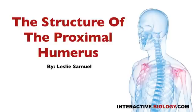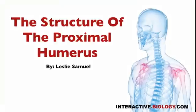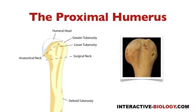Hello, and welcome to another episode of Interactive Biology TV, where we're making biology fun. My name is Leslie Samuel, and in this short video, I'm going to be talking about the structure of the proximal humerus, the third bone involved in the shoulder girdle. So let's get right into it.